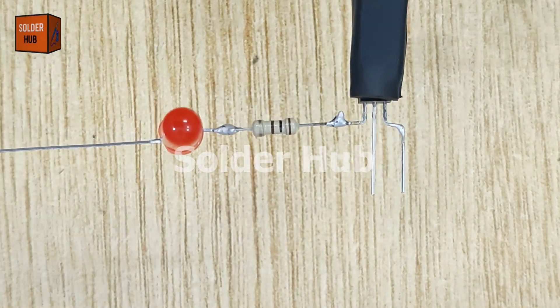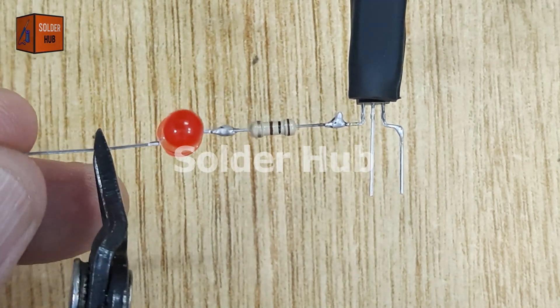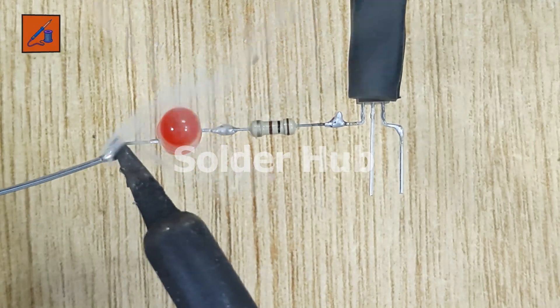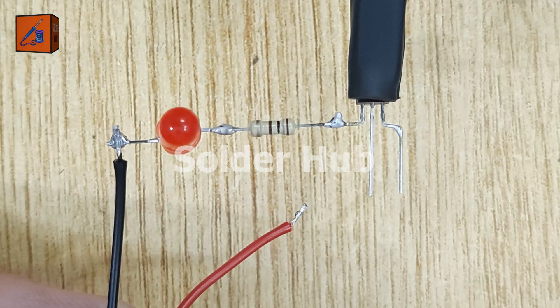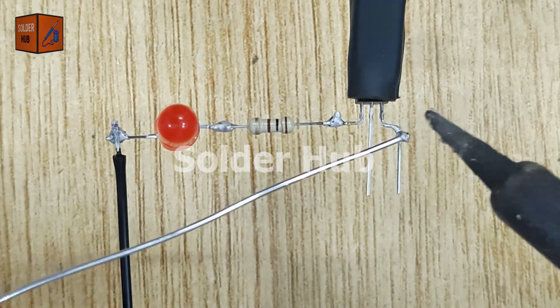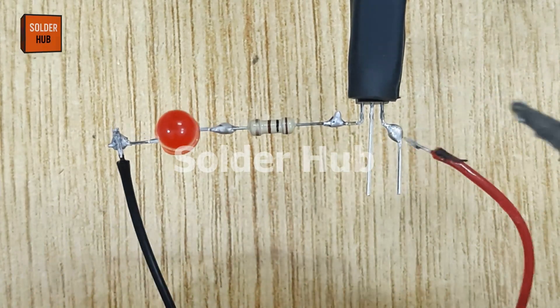Next, I trim the negative pin of the LED to shorten it, apply solder, and then connect it to the negative wire of a 9-volt battery. Finally, I complete the circuit by soldering the positive wire of the 9-volt battery to the emitter pin of the transistor.